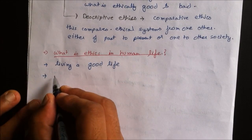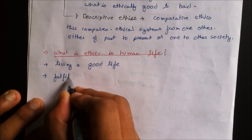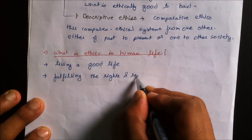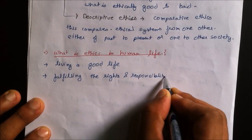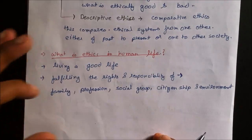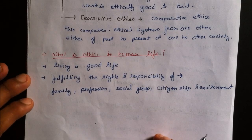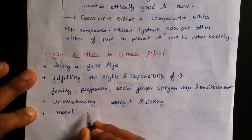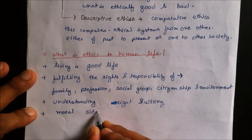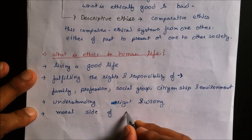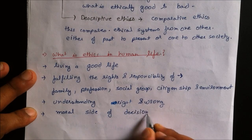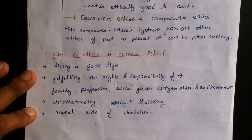What is Ethics in Human Life? It involves living a good life, fulfilling the rights and responsibilities of family, profession, social group, citizenship, and environment. It means understanding what is right and wrong, and being on the moral side of any decision.